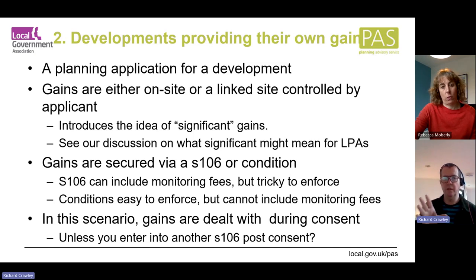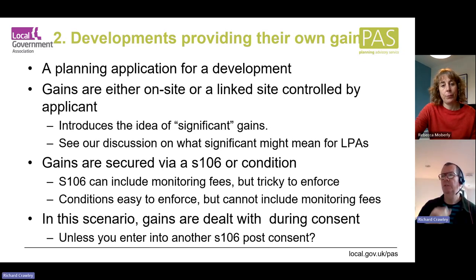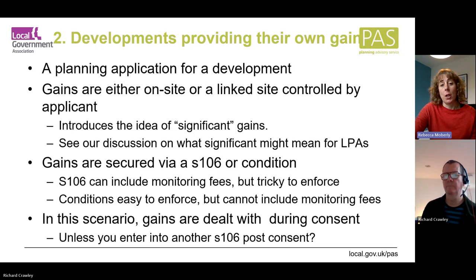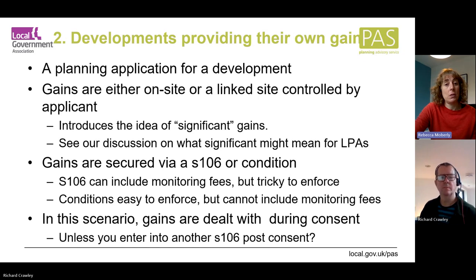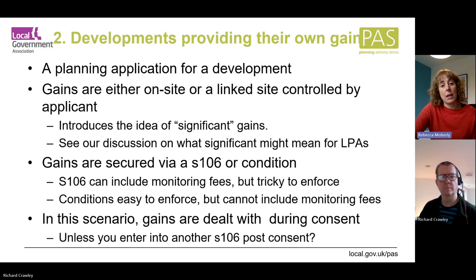We're now in scenario two, where this process kicks off with a planning application or pre-application advice. So you've got a planning application, and then the developer, as part of developing their plans, should in the first stage avoid impacts on habitats on the site. Then where they can't avoid those, are they going to provide the biodiversity net gain on site?